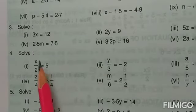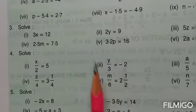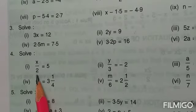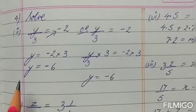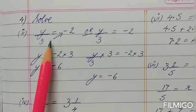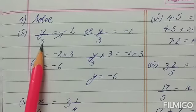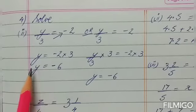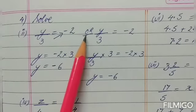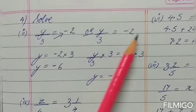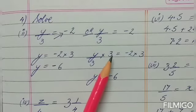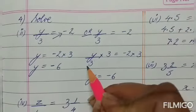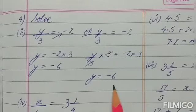For question number 4: x upon 2 equals 5, y upon 3 equals minus 2, z upon 4 equals 3 and 1 upon 4. This time they are in division. Taking the second subpart — y upon 3 equals minus 2 — this 3 is in division, so take it to the other side and it will be multiplied. So y equals minus 2 into 3, which is minus 6. Another way: multiply both sides by 3. The 3 and 3 cancel, and minus 2 into 3 gives minus 6.